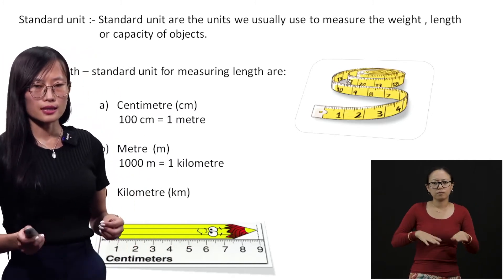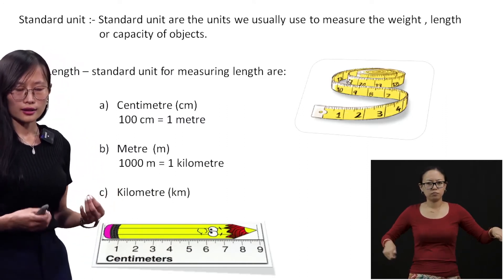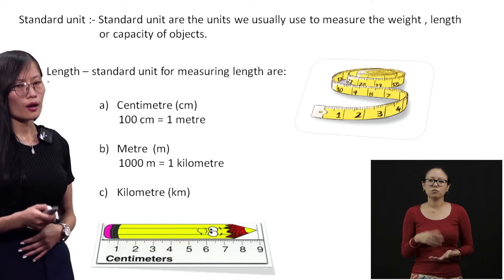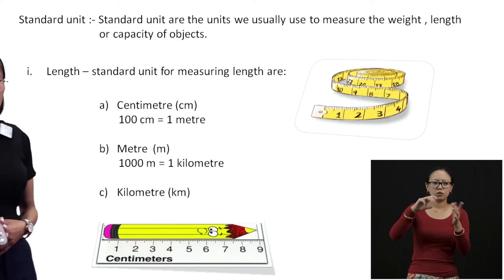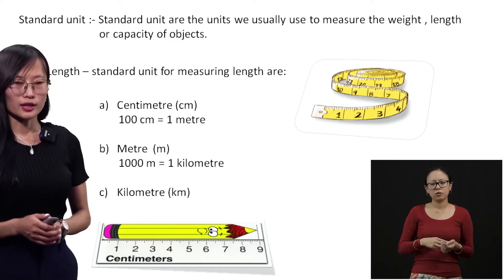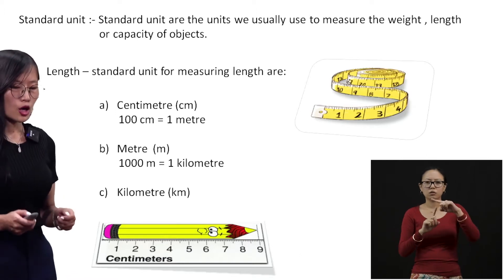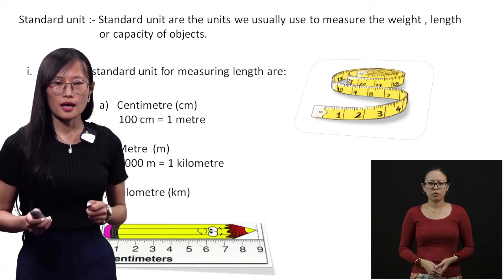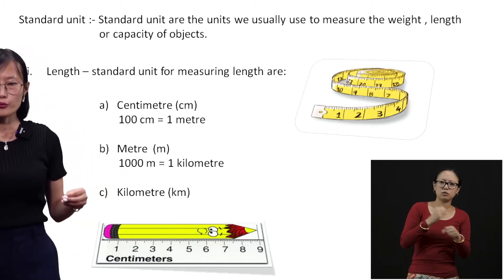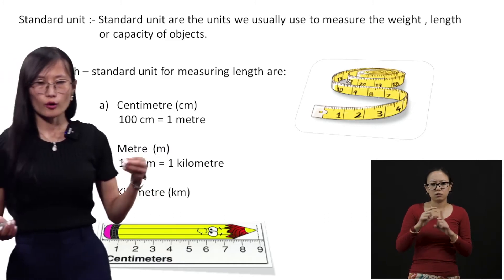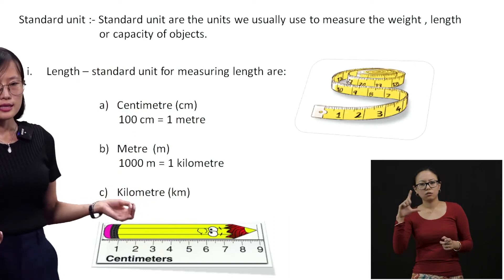We use meters for measuring the length of a cloth. One thousand meters makes one kilometer. We use kilometers when measuring a long distance — for example, the distance from your home to your school, or from your home to your village.